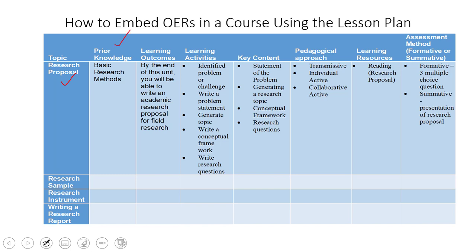Here we have the prior knowledge. I didn't give you the prior knowledge in the last example, but I would like to integrate that prior knowledge in the assignment I've given to you. Prior knowledge refers to the knowledge that the student has already acquired, or is supposed to have acquired, before coming to learn this particular topic. That is why it's called prior knowledge.